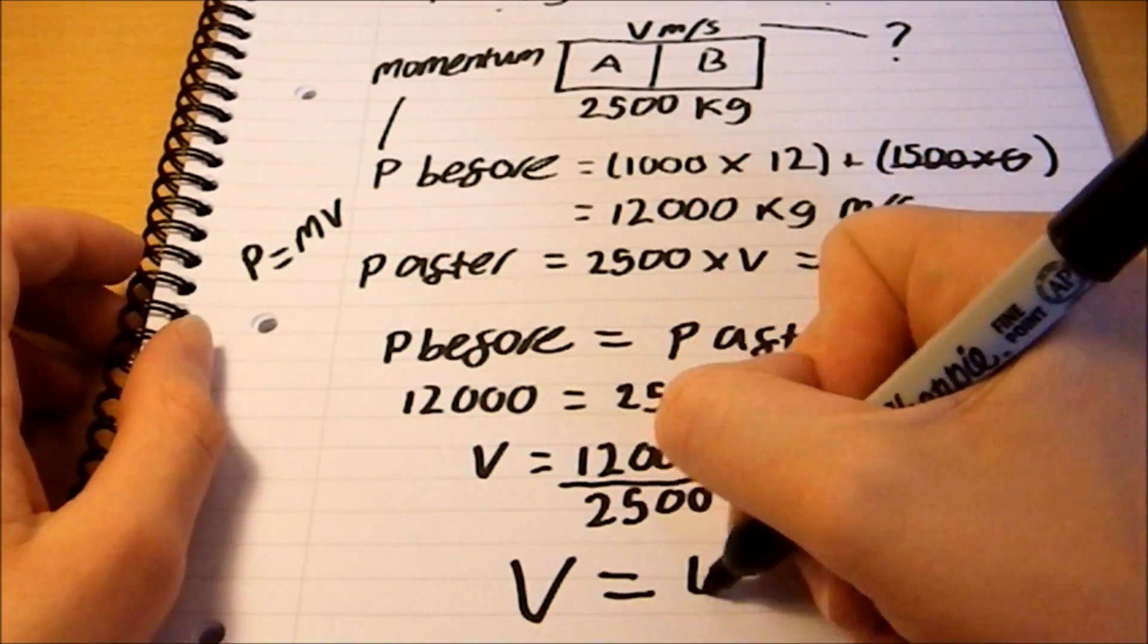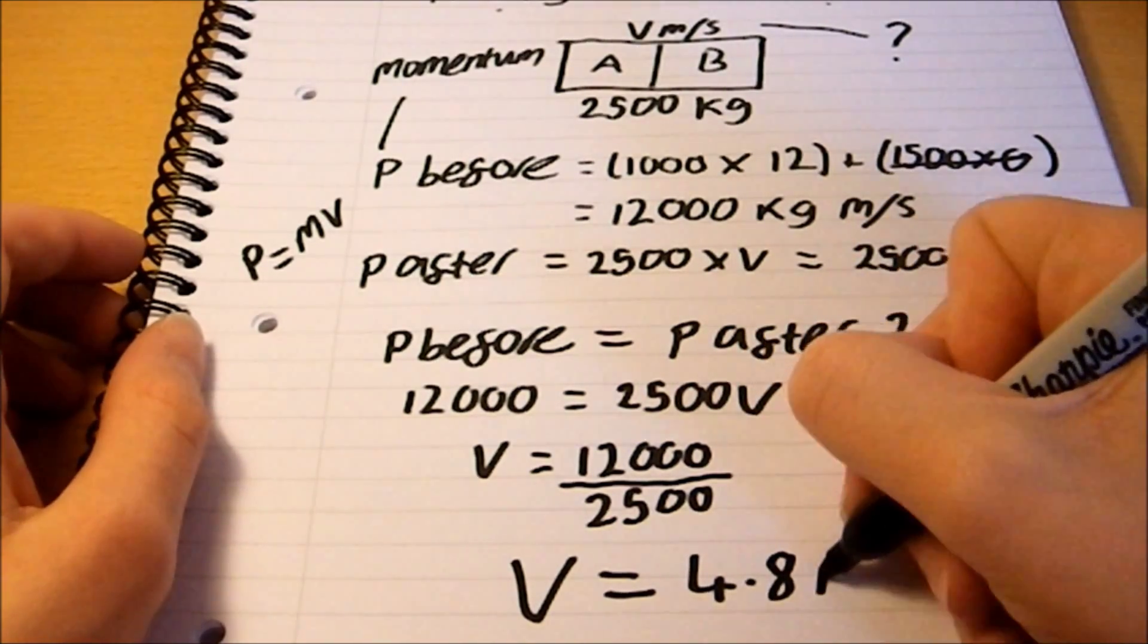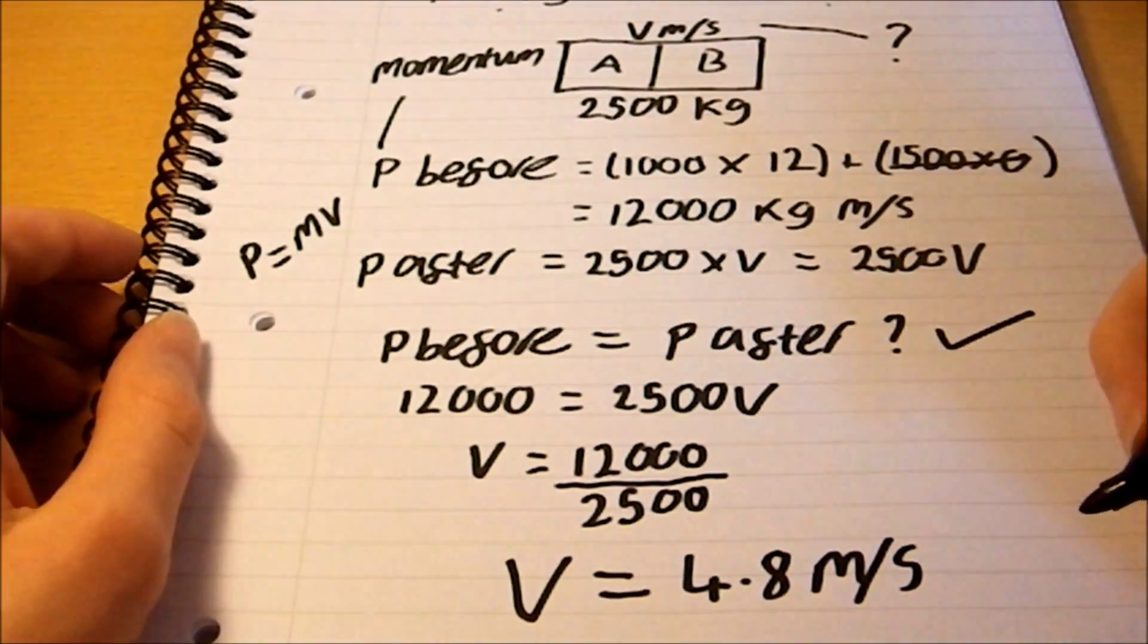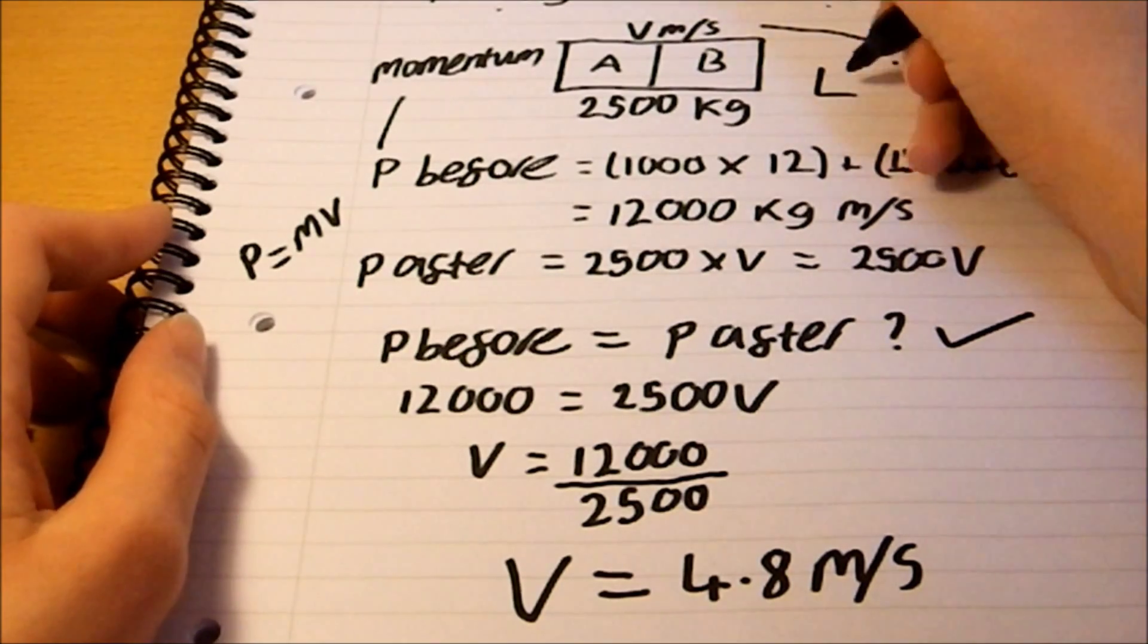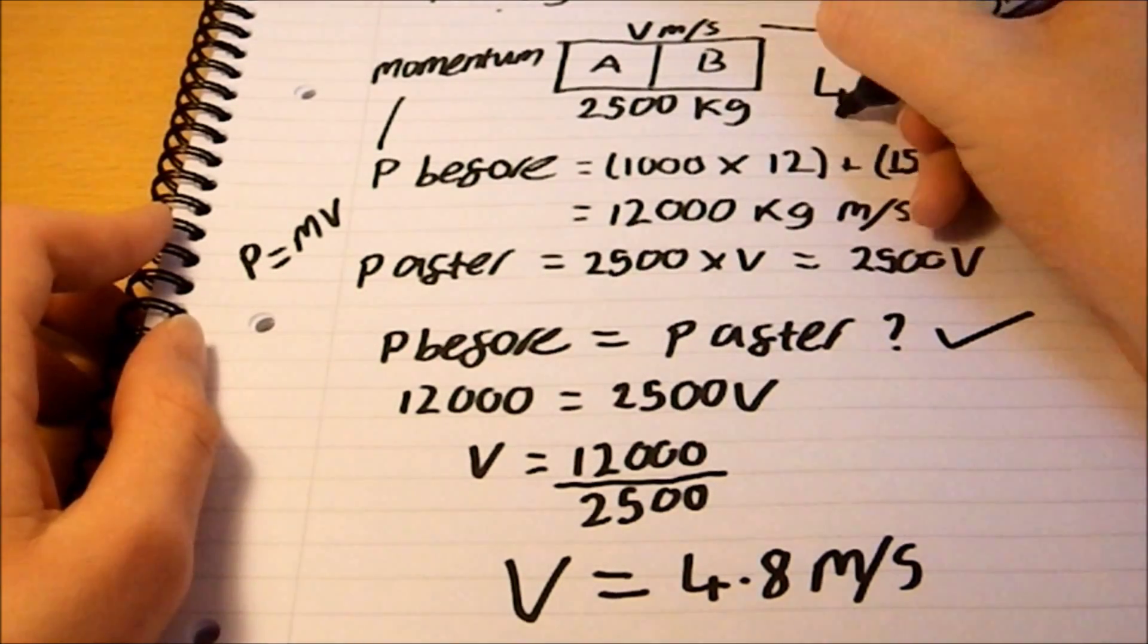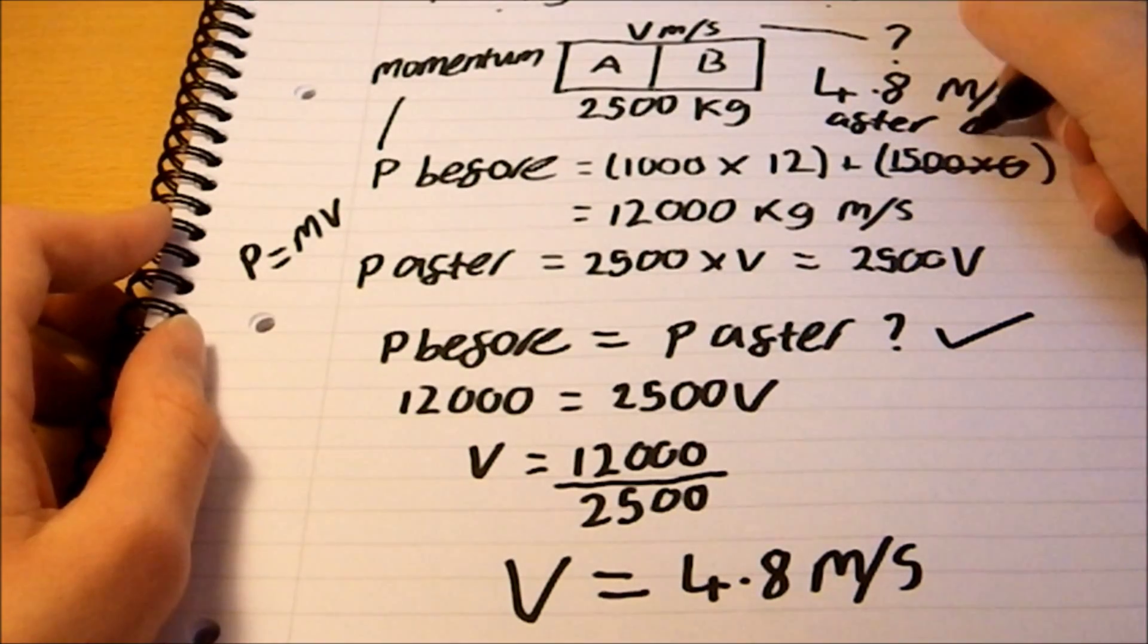So, V equals 4.8 meters per second. Write it up here. 4.8 meters per second after collision.